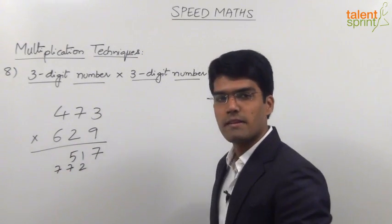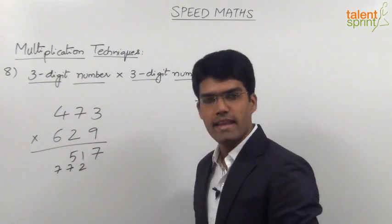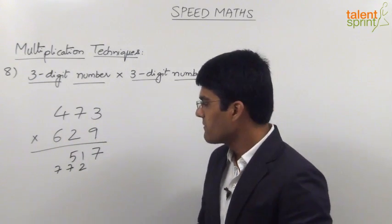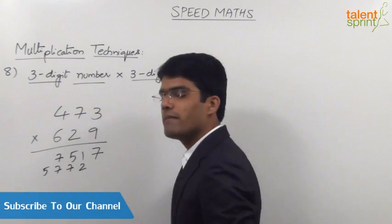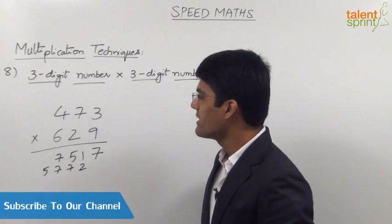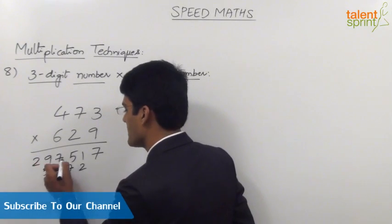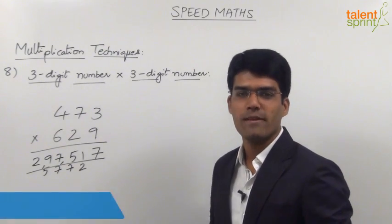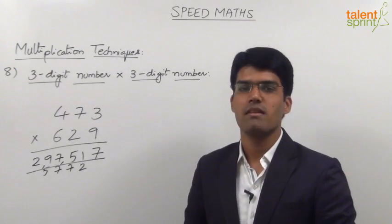Step four: cross multiplication of tens and hundreds places — 4 into 2 is 8, 6 into 7 is 42; 8 plus 42 is 50, plus carry 7 is 57. Take 7 in the answer and carry 5. Last step: multiplication of hundreds places — 4 into 6 is 24, plus carry 5 is 29. So the final answer is 2,97,517. Practice well on this technique so that multiplication of three-digit numbers becomes a simple job.